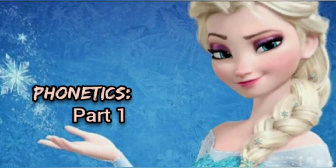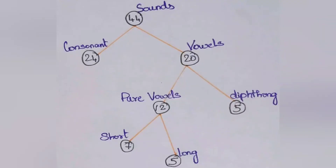Phone — in Greek — means sound or voice. In English, we have 44 sounds, divided into 2 categories: 24 consonants and 20 vowels. Vowel is divided into 2: pure vowels and diphthongs. Pure vowels number 12 and diphthongs 5. Pure vowels are further divided into 7 short vowels and 5 long vowels.